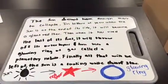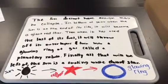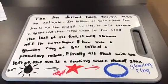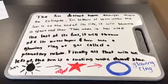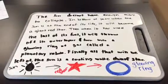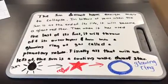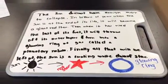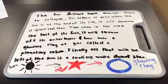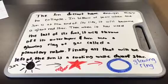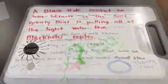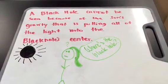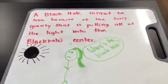The sun doesn't have enough mass to collapse. In billions of years, when the sun is at the end of its life, it will become a giant red star. Then, when it has used up all of its fuel, it will throw off its outer layer and turn into a glowing ring of gas called a planetary nebula. Finally, all that will be left of the sun is a cooling white dwarf star. A black hole cannot be seen because gravity is pulling all of the light into the black hole's center.